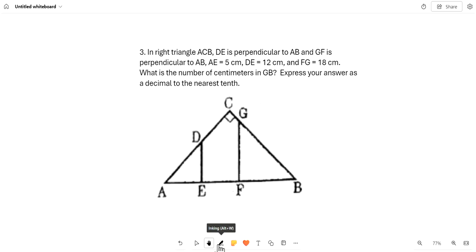This is week 48, Friday, and number 3 says: in right triangle ACB, DE is perpendicular to AB and GF is perpendicular to AB. AE equals 5 cm, DE equals 12 cm, and FG equals 18 cm. What is the number of centimeters in GB?